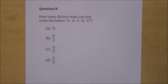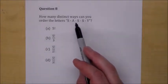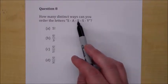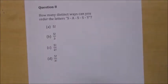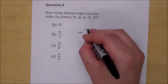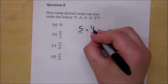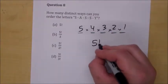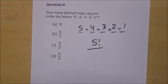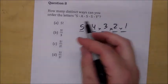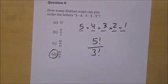Question eight: how many distinct ways can you order the letters of 'SASSY'? You have to see right away that it doesn't matter which S you put in which space — they're all going to look the same. So there will be duplications to remove. In the first instance, there are five letters, so you have five factorial arrangements. Then you divide by the number of sames — there are three S's, so you divide by three factorial. And that's the answer.